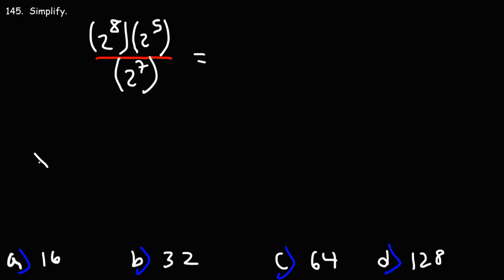Now let's go over some rules dealing with exponents. x to the 3rd times x to the 4th. When you're multiplying by a common base, you can add the exponents. So this is x to the 3 plus 4, which is x to the 7.